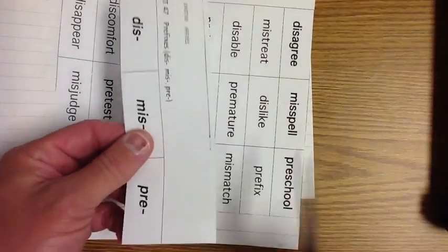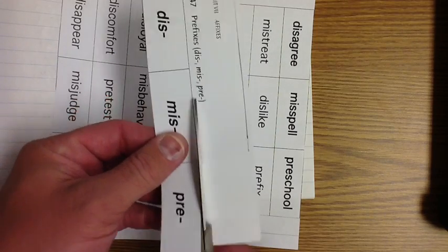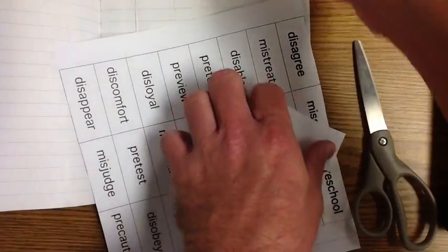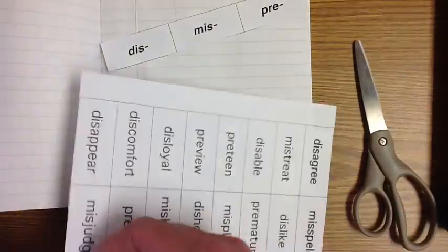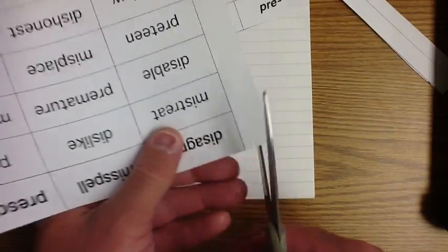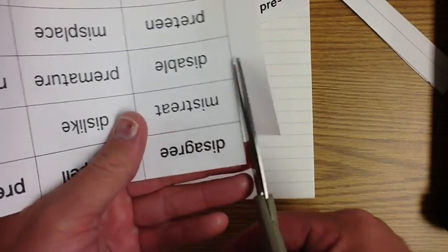I've got to cut them out, but I'm going to leave them connected so we can actually write those down. Then I pop off this, leave that there because we're going to glue that up there in a second, and let's finish cutting our words out. As I go through this, I want to ask you a question.